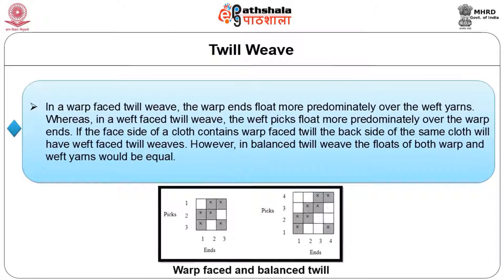Twill weaves are further classified into warp-faced, weft-faced, or balanced twill based on the prominence of either warp or weft. In a warp-faced twill weave, the warp ends float more predominantly over the weft ends. If the face side of the cloth contains warp-faced twill, the back side will have weft-faced twill. In a balanced twill weave, the floats of warp and weft yarns are equal.